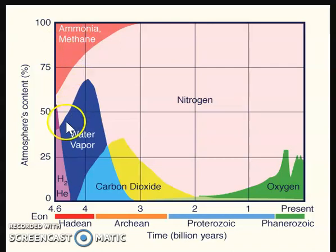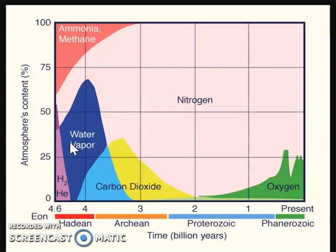Another important process going on in the early Earth is that it's very hot and slowly cooling off. A lot of the residual heat is slowly moving out away from the Earth into space.